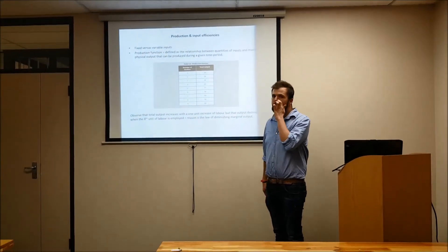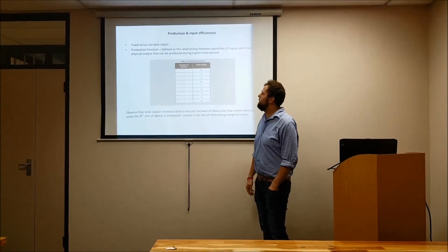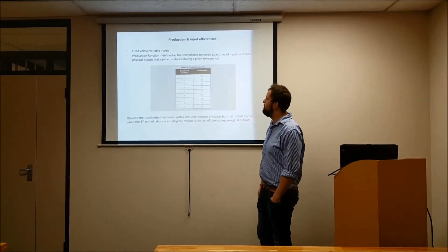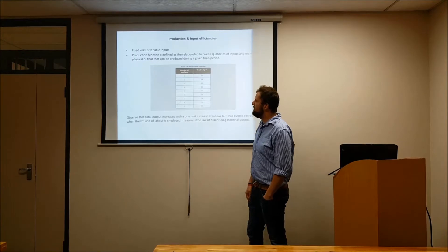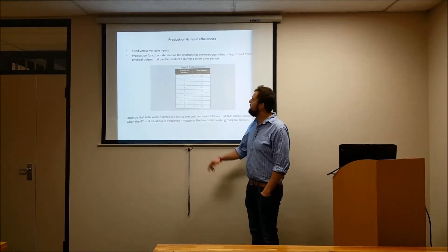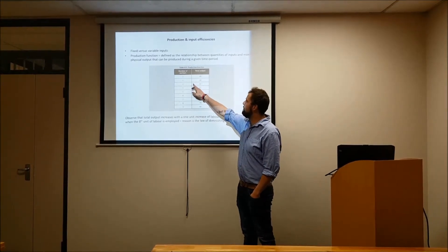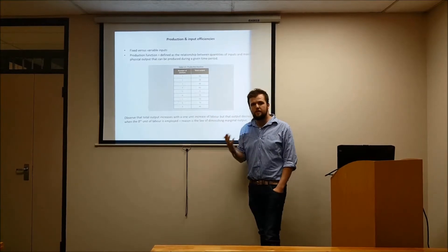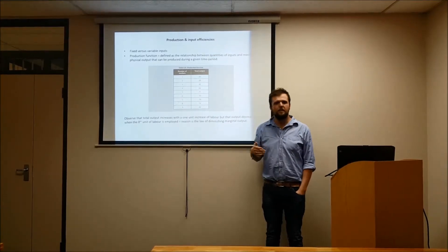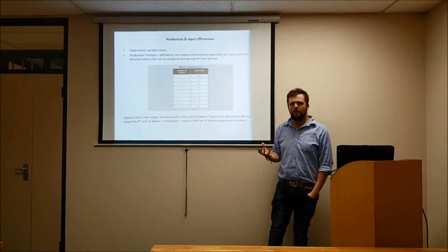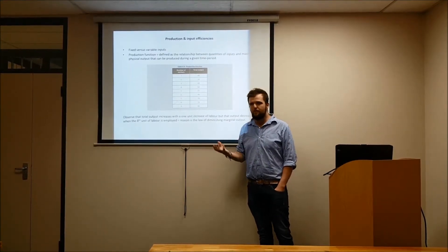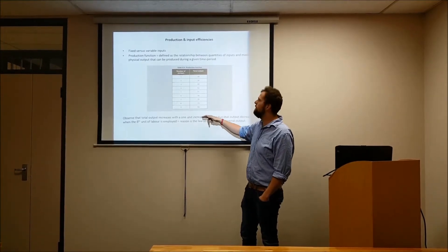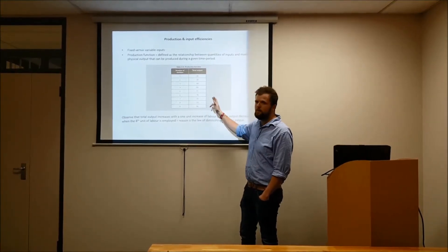Let's look at a simple table. You have the number of workers in the first column and the total output in the second column. As you can see, if you increase the number of workers, you increase the total output. This is fairly simple — if you add more labour to a firm, you will get more output.